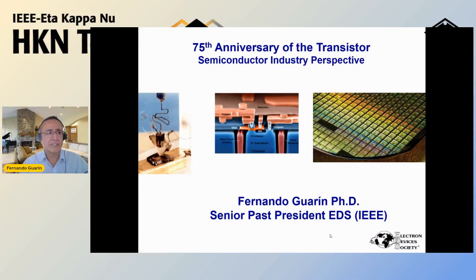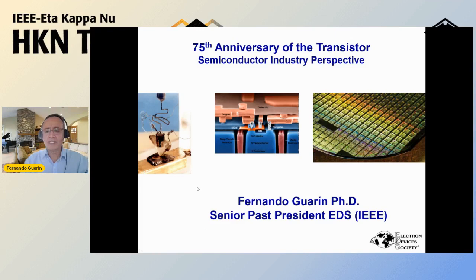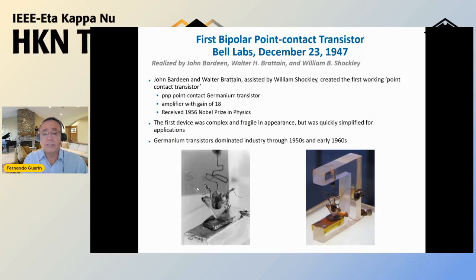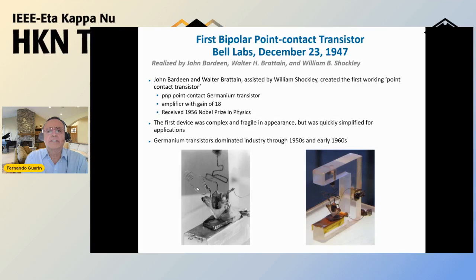We are celebrating — although we're in the 76th year — it was December of 1947, so we're celebrating both years. We've come a long way in how we fabricate devices, and the role of transistors in society is unquestionable. The invention and proof of concept was carried out at Bell Labs on December 23rd, 1947. John Bardeen and Walter Brattain actually did the first demonstration. The first point-contact transistor was a PNP germanium transistor that showed amplification with a gain of 18, and for this work they received the Nobel Prize in Physics in 1956.